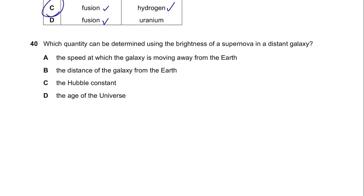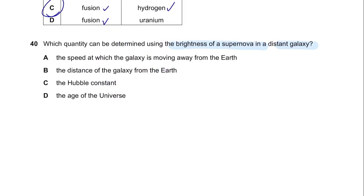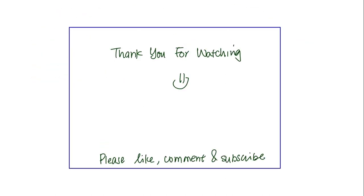Question 40. Which quantity can be determined using the brightness of a supernova in a distant galaxy? This has been explained in my chapter 6 video—for a distant galaxy, you use the brightness of a supernova to determine the distance of the galaxy. Your answer is B. Thank you for watching the video till the end. I wish you the very best and good luck for your upcoming Paper 2 Physics. If you have any questions, please ask in the comments. Thank you, bye bye!